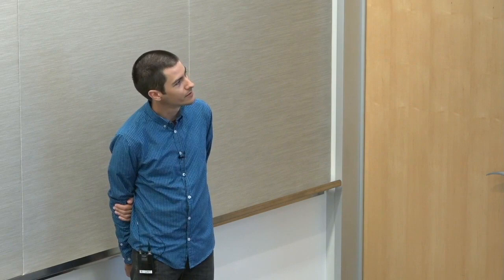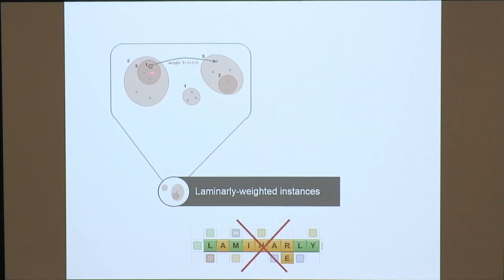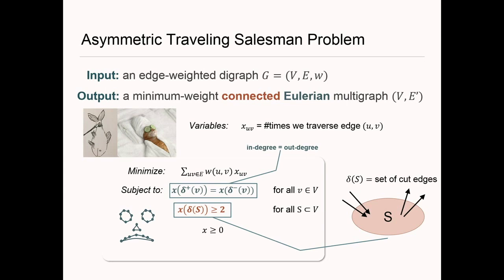Let's begin with the first reduction, to something we call laminarly-weighted instances — 'laminarly' is admittedly not a valid Scrabble word. If there is some family of sets and each edge gets its weight from this family in a way I'll explain — this proceeds by LP duality.